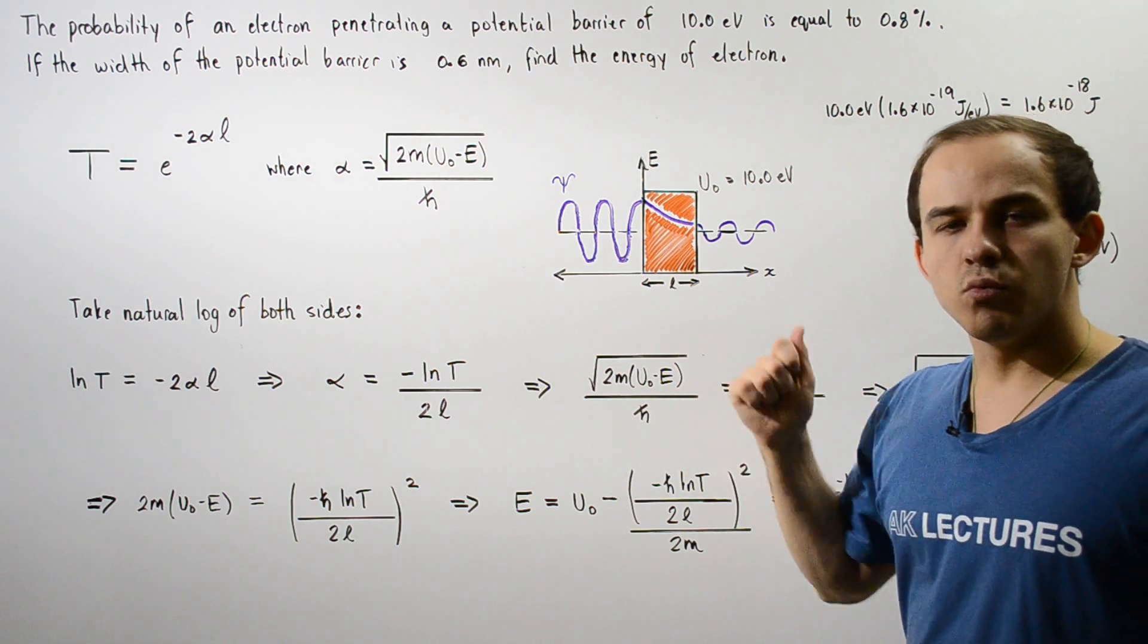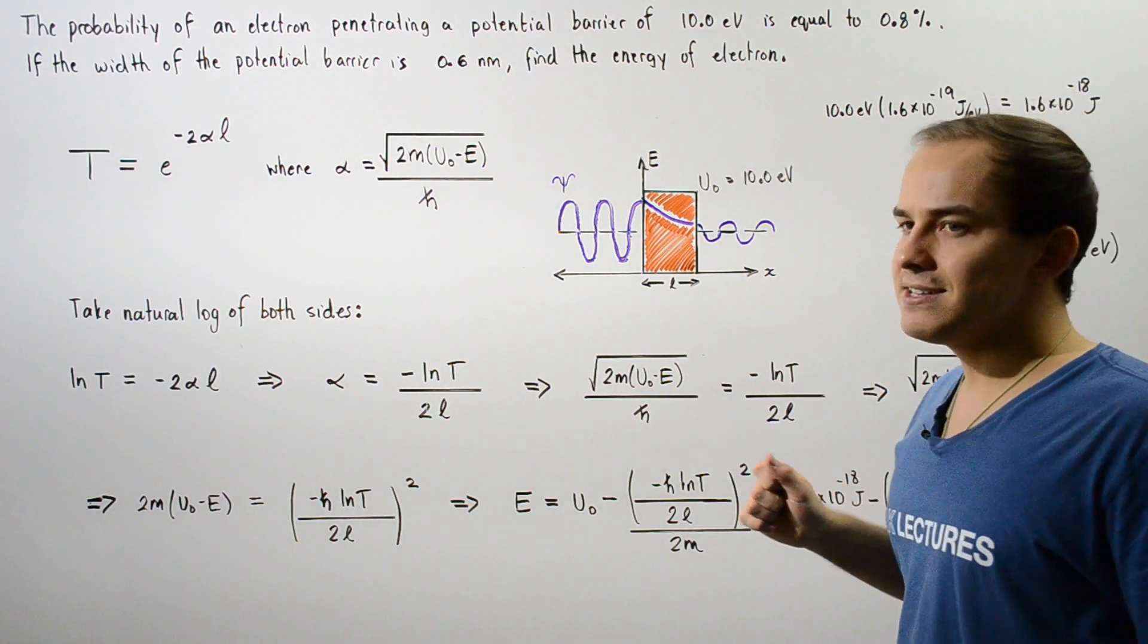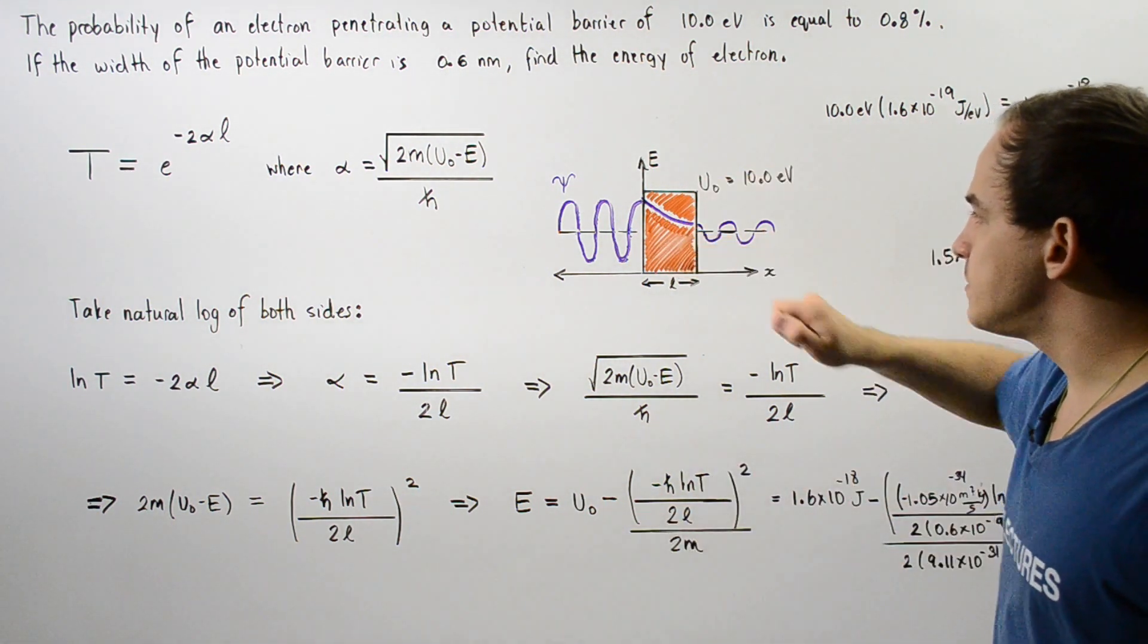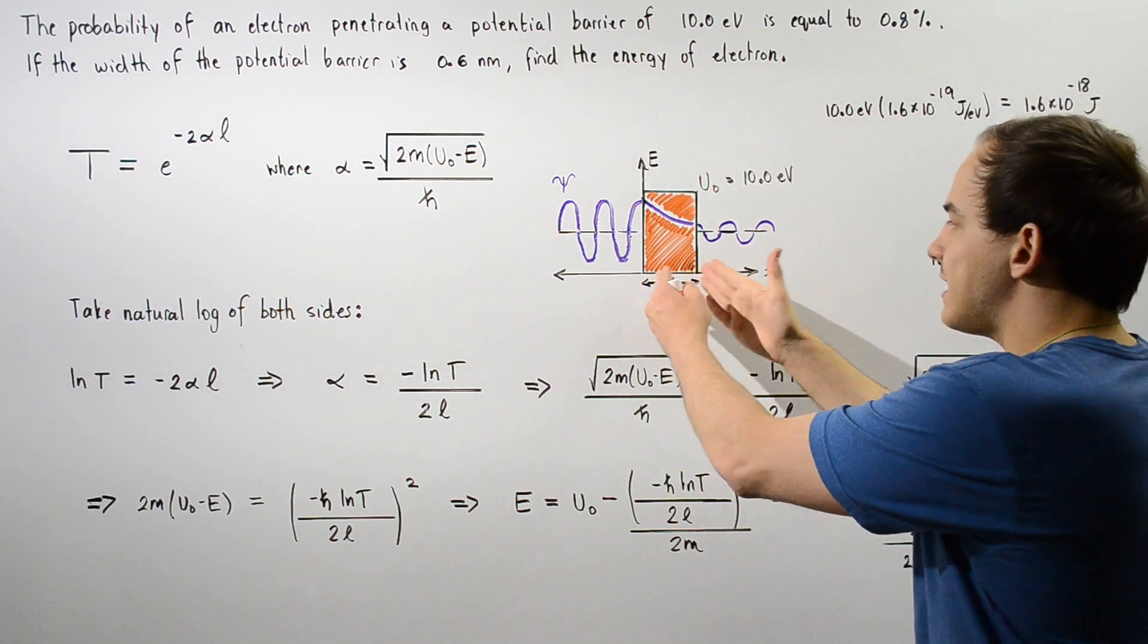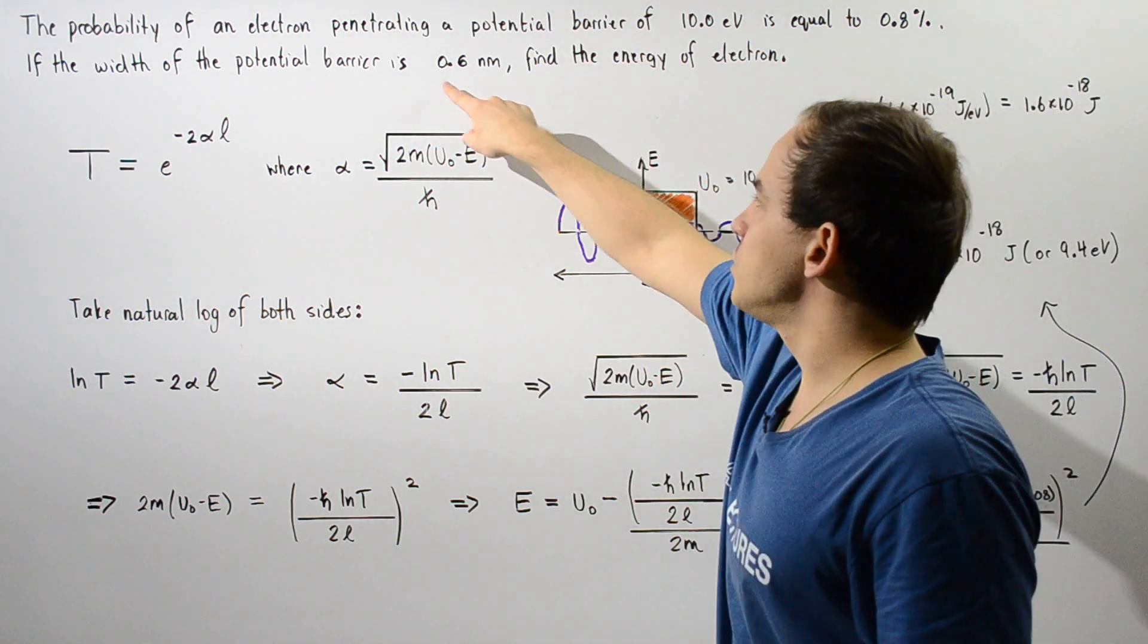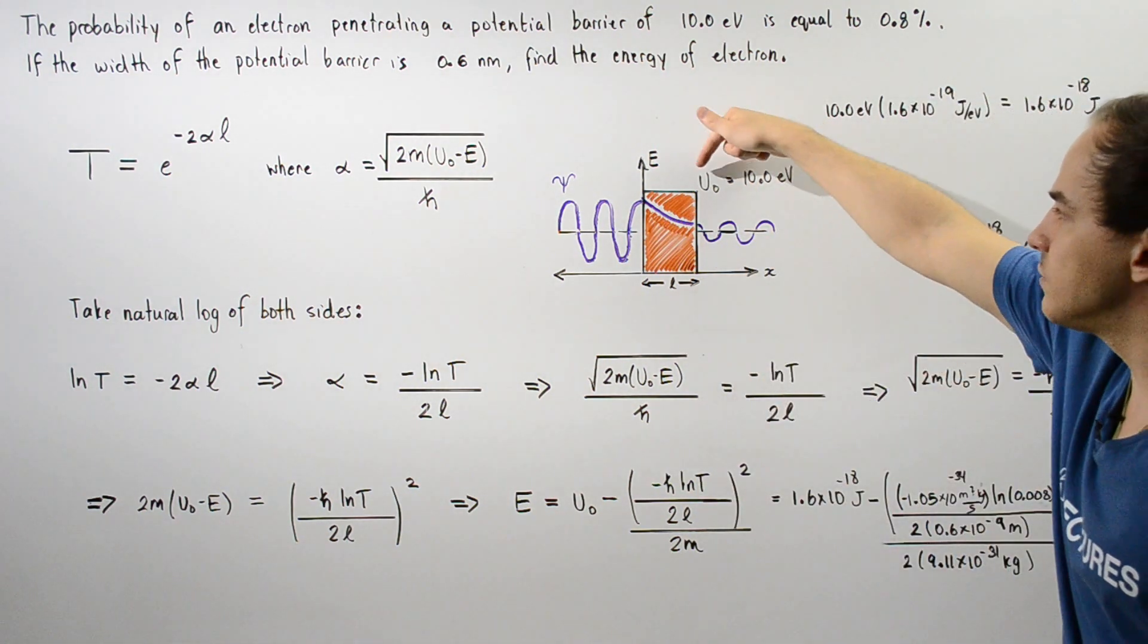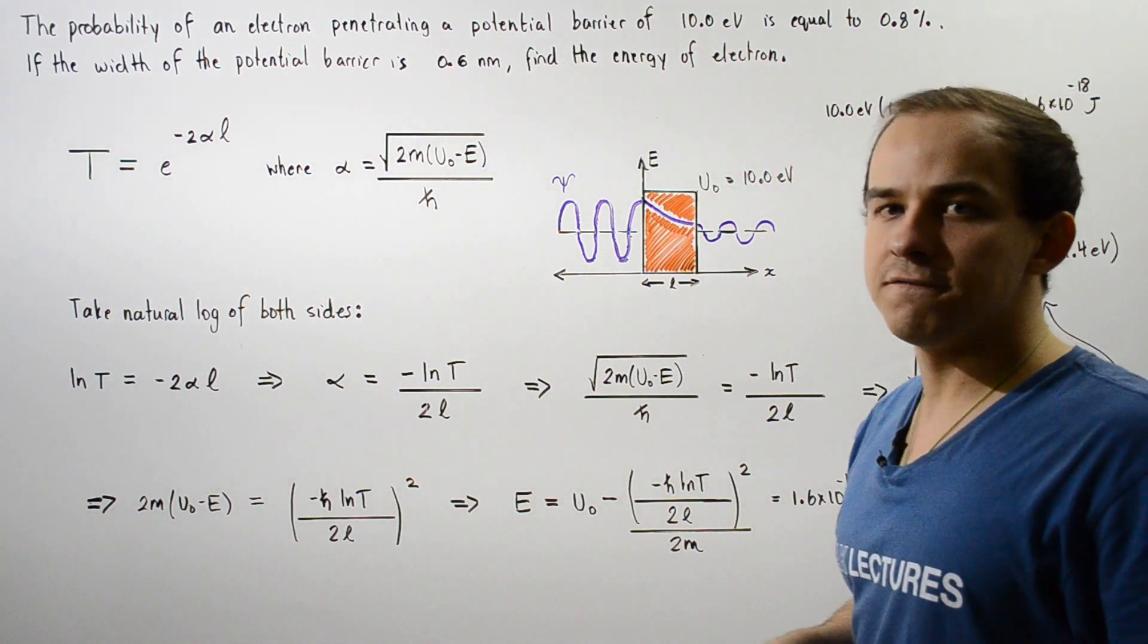In the diagram, the y-axis represents the energy given by E and the x-axis represents our position. This is basically our potential barrier region. It has a width given by L which is equal to 0.6 nanometers and the height of our barrier is given by U0 which is equal to 10 electron volts.